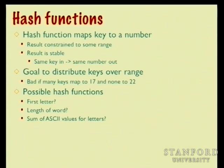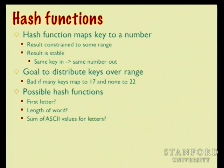You want the hash function to use the whole bucket range equally. If you put 100 keys in with 100 buckets, ideally each bucket has about one thing — avoiding clusters where 25 things land in one bucket. Since our keys are strings, we'll use the characters in the string to compute a reliable hash that spreads similar strings to different buckets.